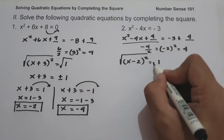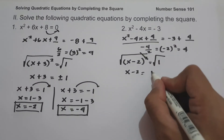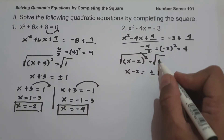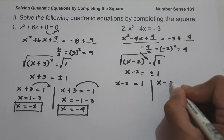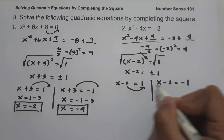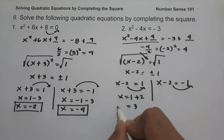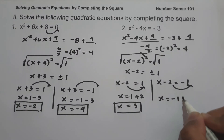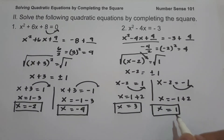Let us take the square root of both sides. It gives us x minus 2 equals positive and negative 1. We have two equations: x minus 2 equals 1, and x minus 2 equals negative 1. Moving negative 2 to the other side: x equals 1 plus 2, which is 3; and x equals negative 1 plus 2, which is 1. Therefore, the values of x are 3 and 1.